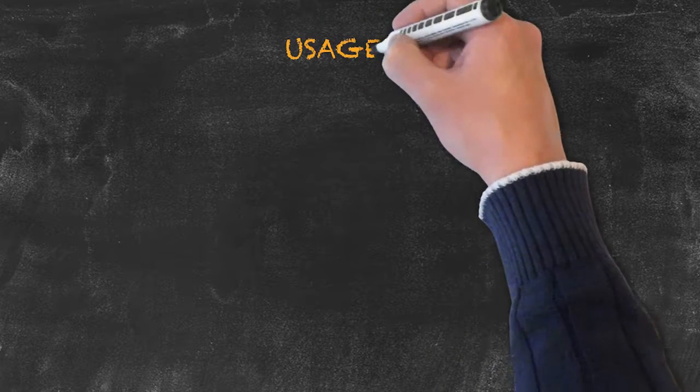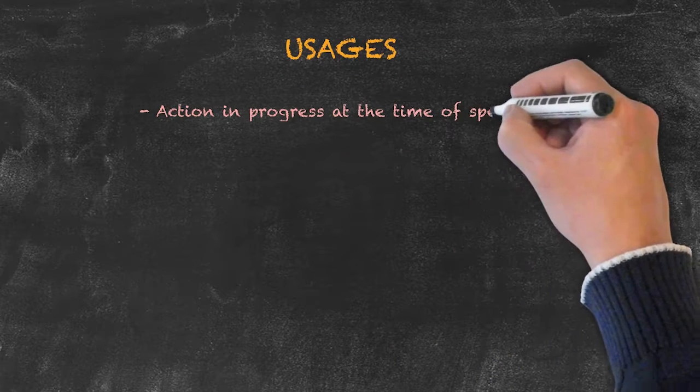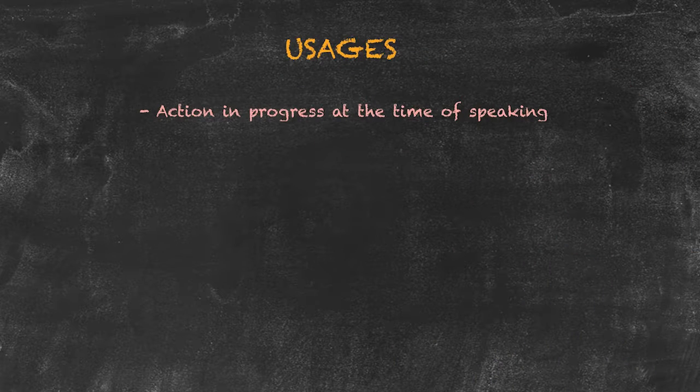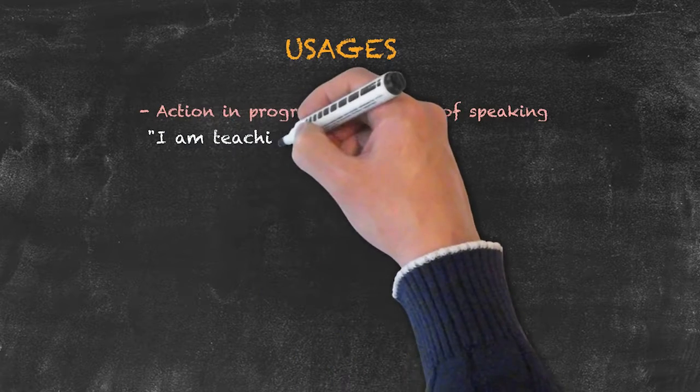The two most common usages for the present continuous tense, as it relates to speaking about things in the present, we have actions in progress at the time of speaking, specifically right when it's being said. So I can say, I am teaching right now.